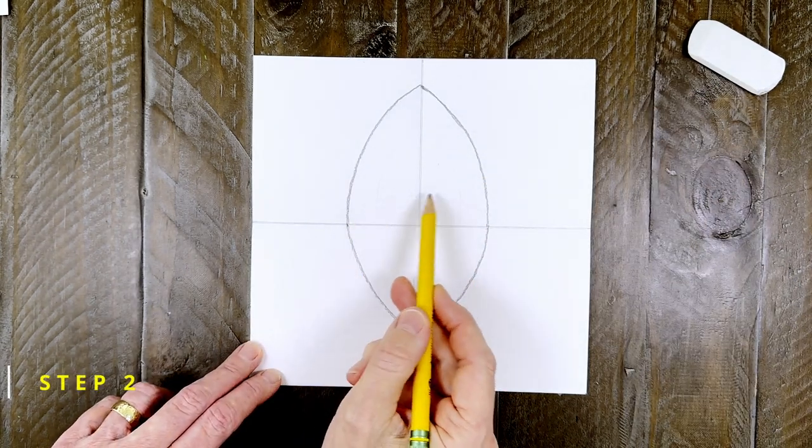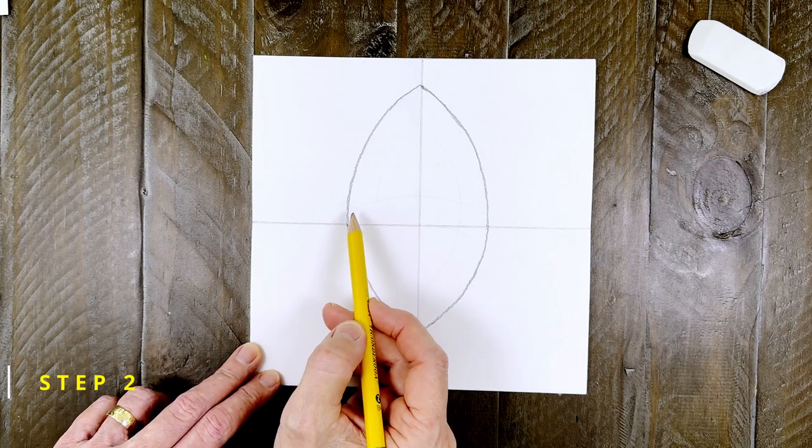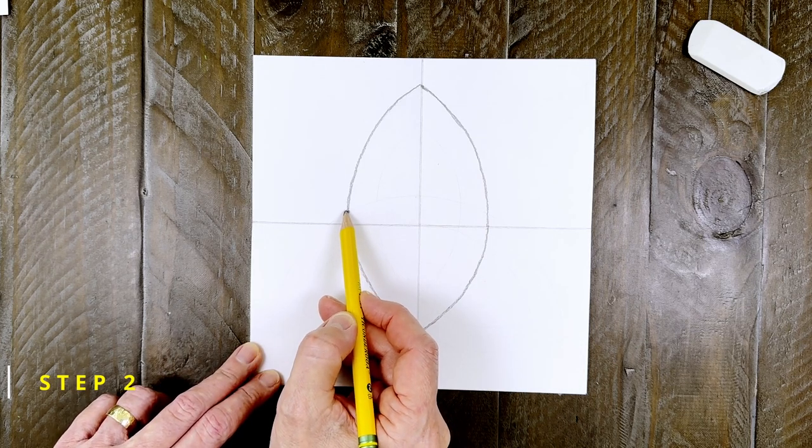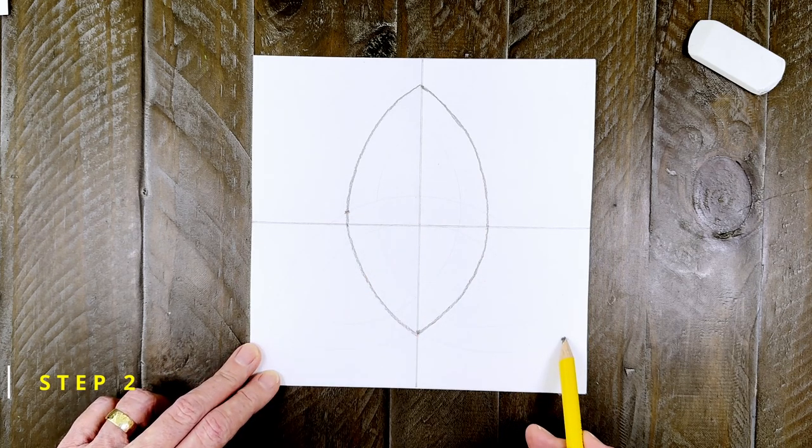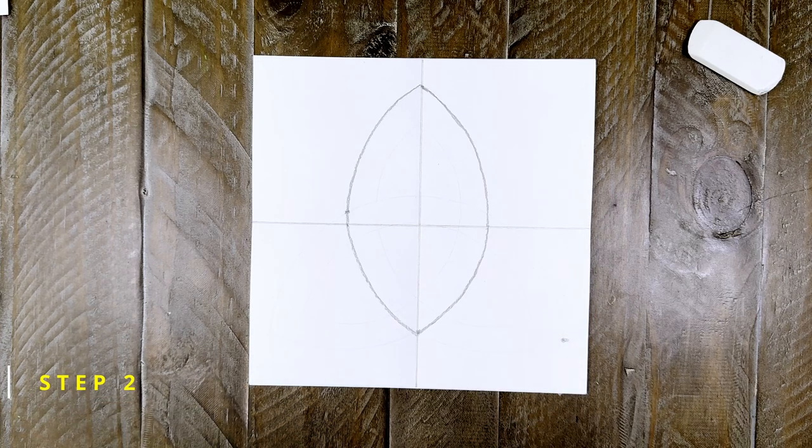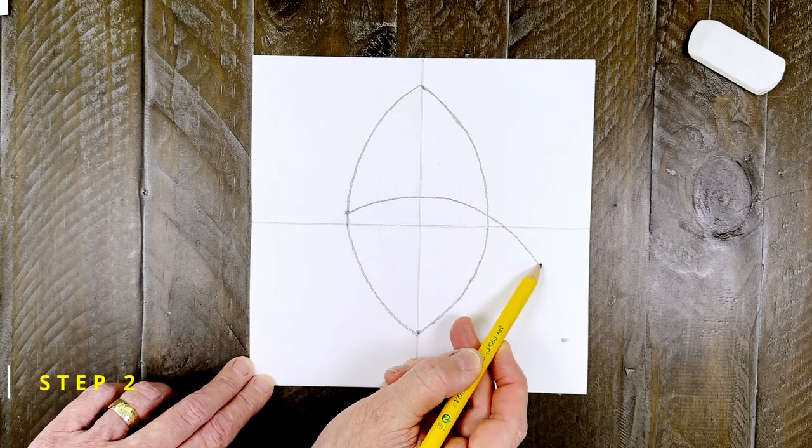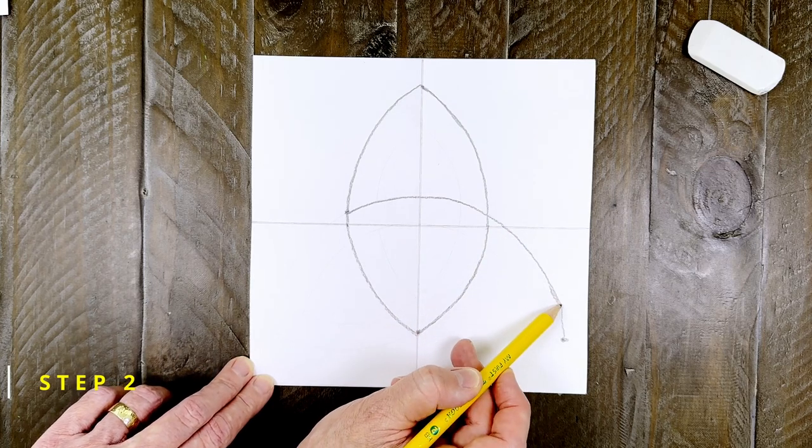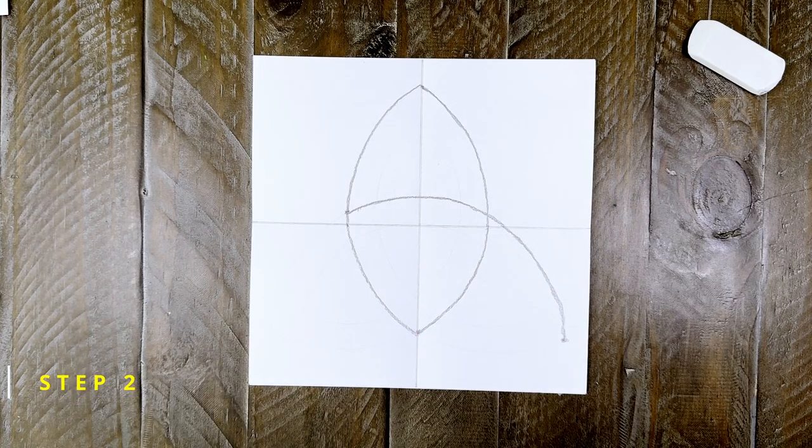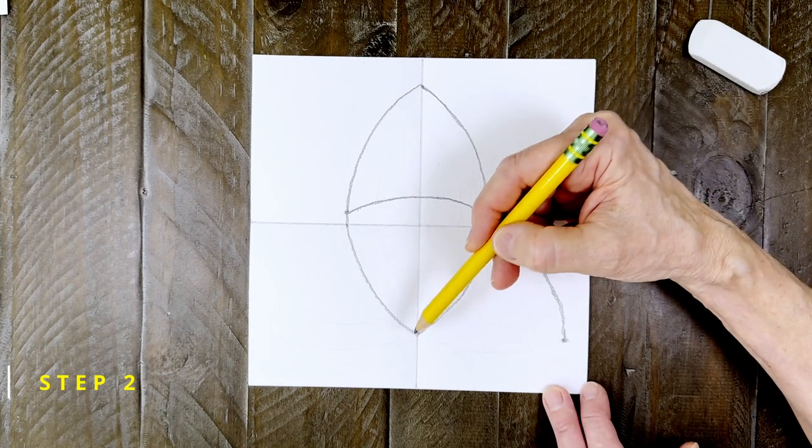Step number two. The next petal shape is going to be rotated kind of like this. Make two dots as shown to help you plan that petal and then connect them with a large curve like I'm doing here. Now you can finish that petal by just drawing the bottom part of it.